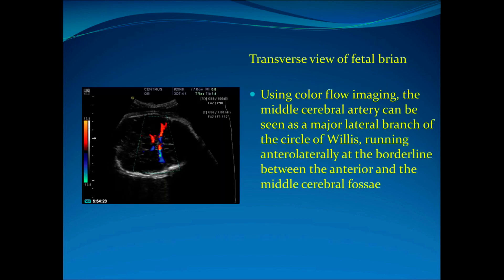To perform the scan, apply your colour flow box over the area in the transverse view of the fetal head where the circle of Willis is. Use colour flow imaging to find the middle cerebral artery, which can be seen as the major lateral branch of the circle of Willis running anterolaterally at the borderline between the anterior and middle cerebral fossa. Find your normal transverse view, apply colour Doppler, and you should get the circle of Willis, as demonstrated in the image on the left-hand side of the screen.